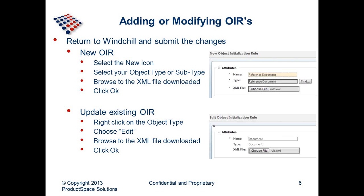Once you've made those modifications, there are two ways to get it back in the system. One is if you're creating a new OIR at the org or product level, or you have a subtype you want to associate a new OIR to. You'll see a new icon to create the new object initialization rule. I recommend giving it the same name as the type or the one you're replacing at a lower level, then select the object type or subtype, and browse your computer for the XML file. The second way is if you're updating an existing OIR — right-click on the object and say edit. You don't have to pick the type again; just browse for the new XML file and that will update it.